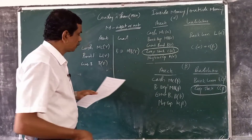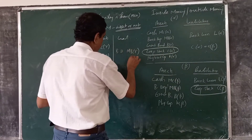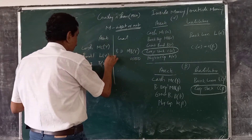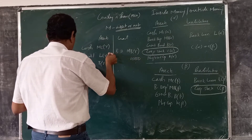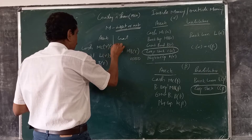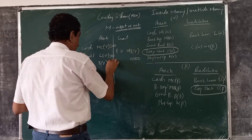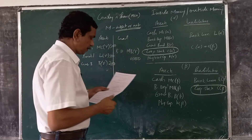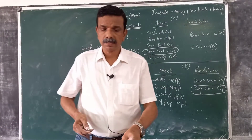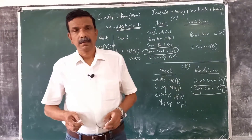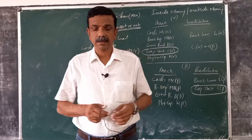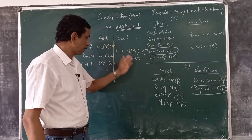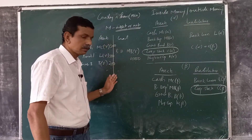Suppose that bank deposits are 1000. Of this, bank loans amount to 500, 300 is kept in the form of cash, and 200 is used for purchasing government bonds. For simplicity, we assume that the banking sector's net worth is zero, meaning assets equal liabilities: 1000 equals 1000.